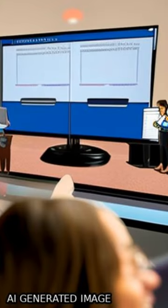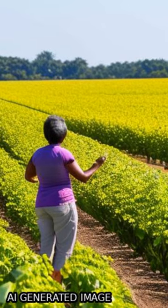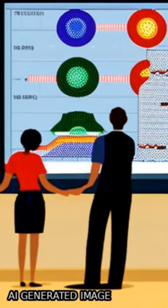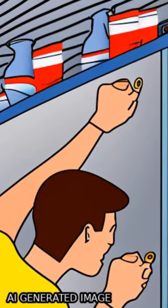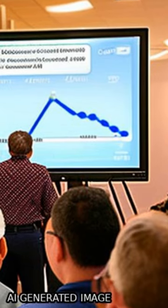VOSviewer was used to create network and overlay visualizations, revealing co-occurrence and clusters of connected publications, country input, author collaboration, and interrelated research topics based on titles and abstracts.